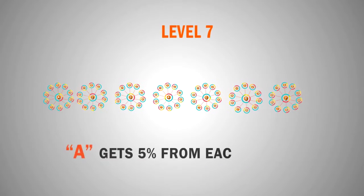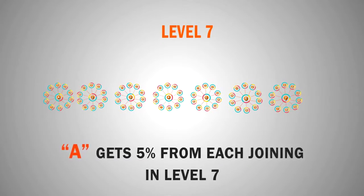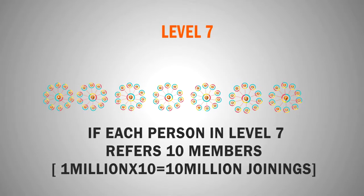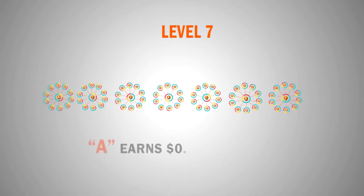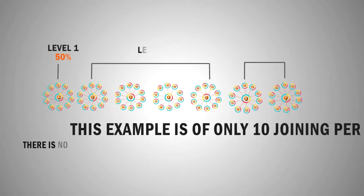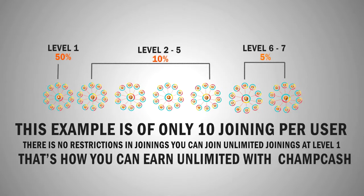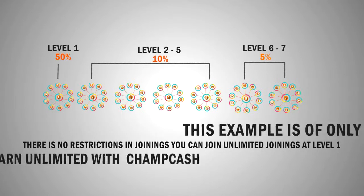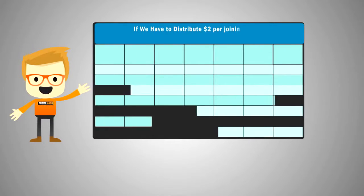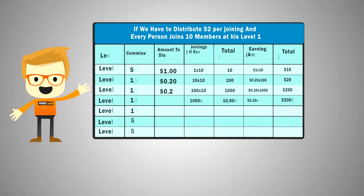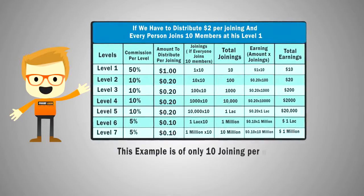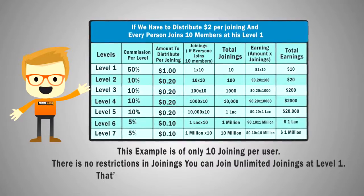At last, level 7, you will earn 5% commission, and there will be 10,000,000 joinings in level 7. So you can earn $1,000,000 from the 7th level just by referring Champ Cash to your friends. This example is only of 10 joinings per person — everyone can join unlimited friends in their network and earn unlimited. According to our earning chart, at 7 levels, every user can earn more than $1,000,000 by just referring Champ Cash to 10 friends. To earn more, start referring Champ Cash to more friends.